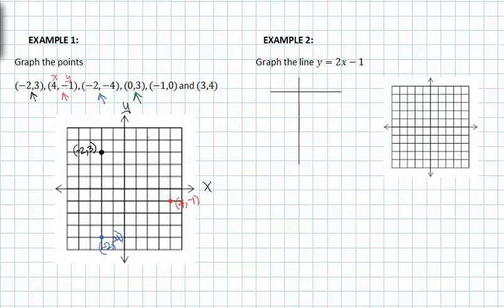The coordinate point (0, 3) starts at the origin, and we move zero spaces in the horizontal direction and up three spaces in the y direction — and this is the point (0, 3). The point (-1, 0) again starts at the origin; we head to the left one space and then up or down zero spaces, and so this is the coordinate point (-1, 0).